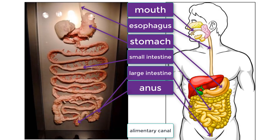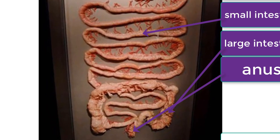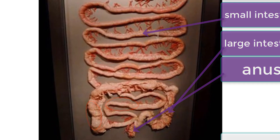Why is it called the small intestine if it is longer than the large intestine? The name comes from the diameter of the tube. The small intestine is much smaller in diameter compared to the large intestine, even though it is much longer.